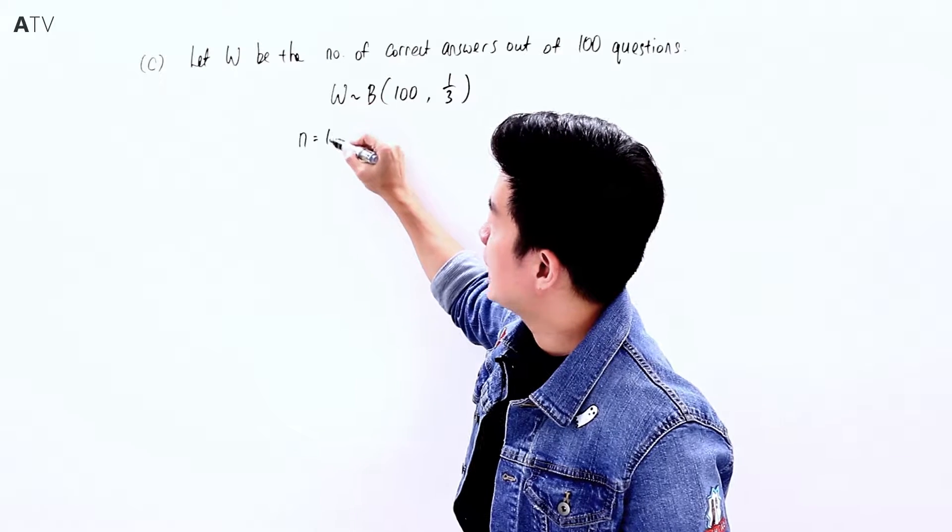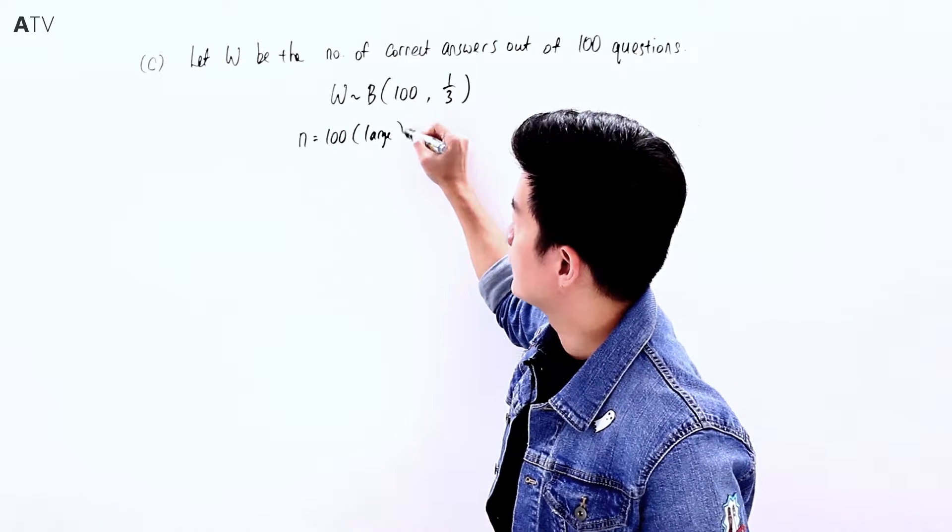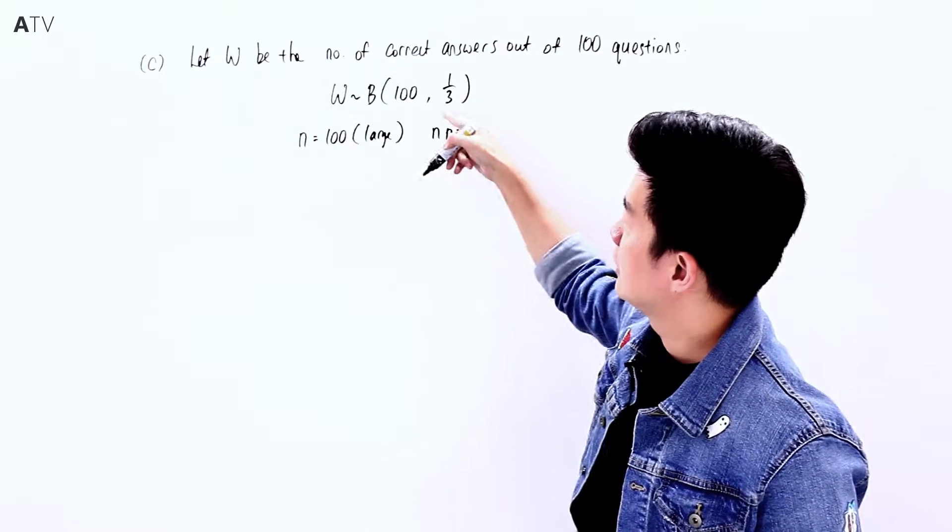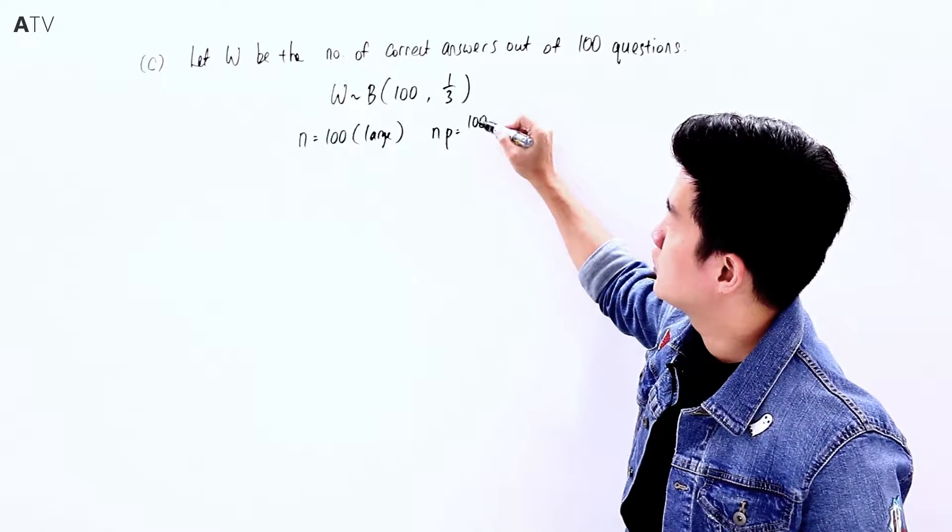The number of trials n = 100 is large. Checking np, we get 100/3, which is greater than 5.